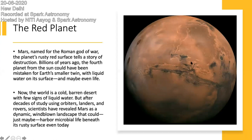The planet's rusty red surface tells the story of destruction. Billions of years ago, the fourth planet from the Sun could have been mistaken for Earth's smaller twin, with liquid water on its surface and maybe even life. Mars is named after the Roman god of war, and its rusty red surface tells the story of destruction.